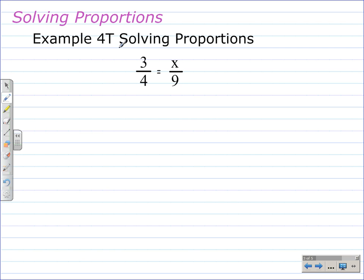Here we have example 4T, where we have 3 over 4 equals x over 9. Using the cross products property, we multiply 9 times 3. That would be like our a times d. So 9 times 3 being equal to the other cross product, 4 times x.